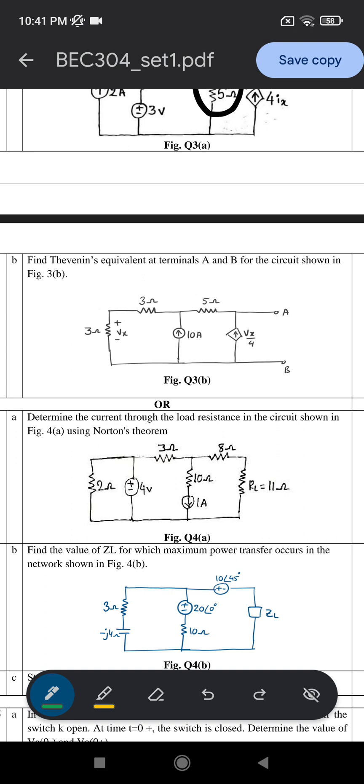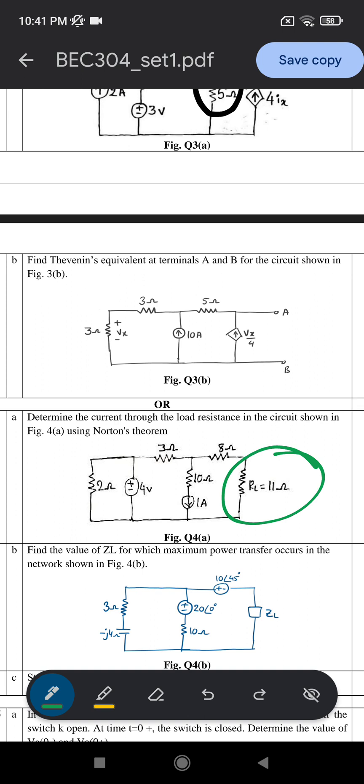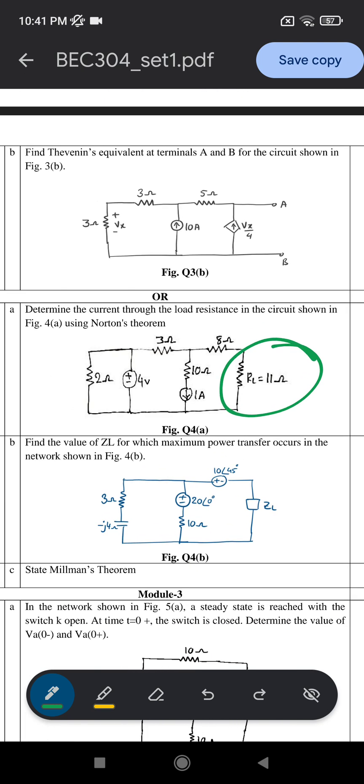The next question is: find the current through the load resistance in the circuit shown below using Norton's theorem. You're going to find the current to the load resistance. You're going to get a question on finding the current through the resistance using Norton's theorem.